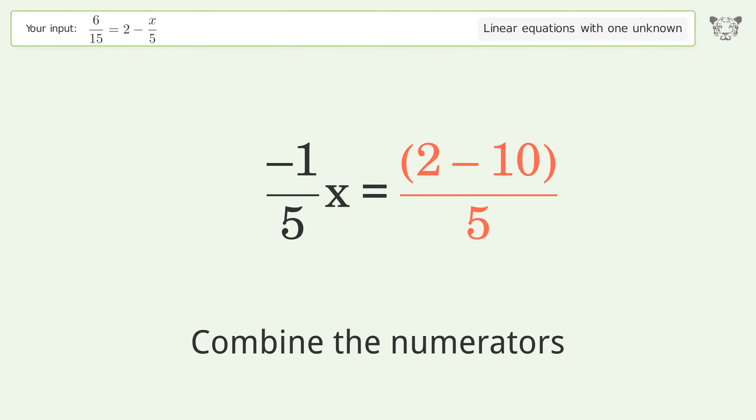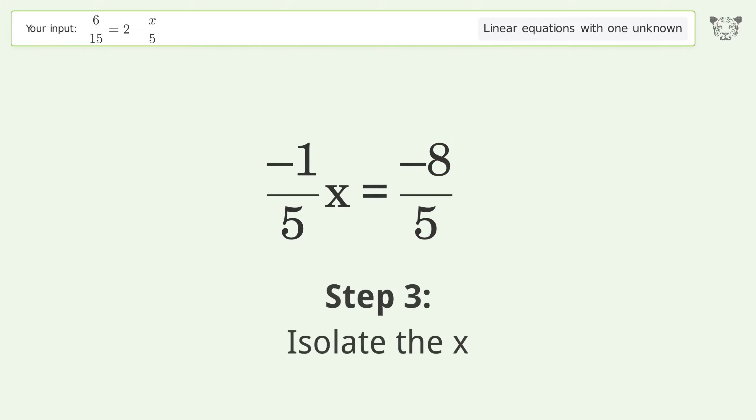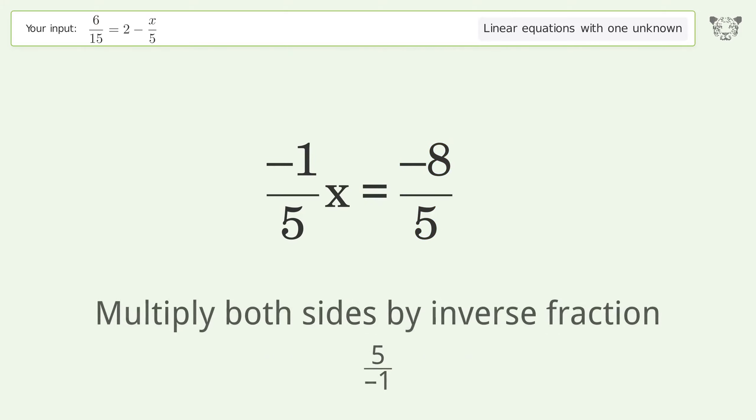Combine the numerators. Isolate the x. Multiply both sides by inverse fraction 5 over negative 1.